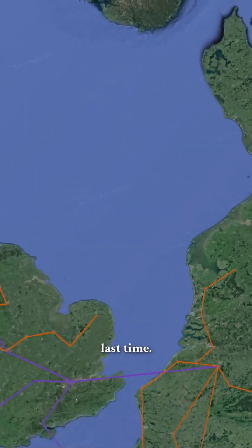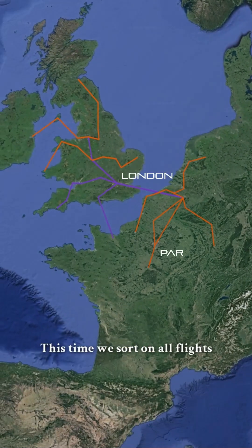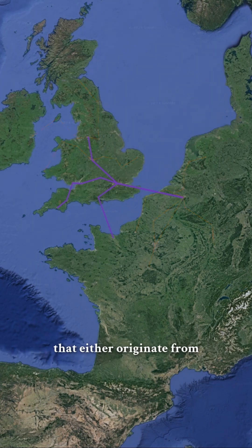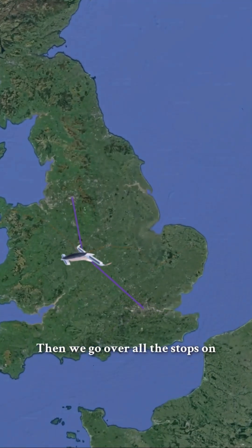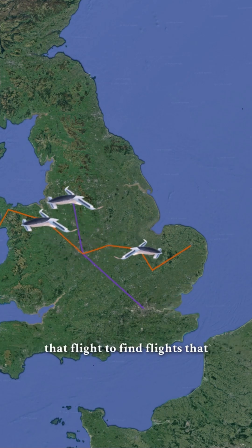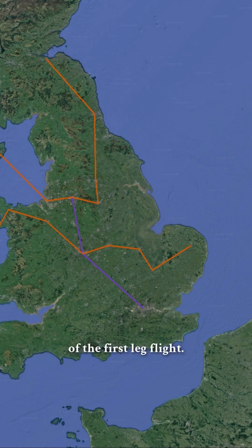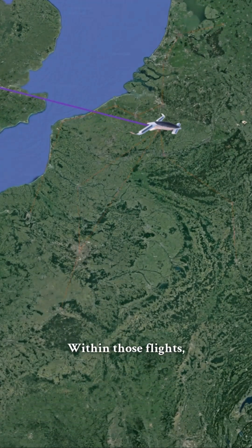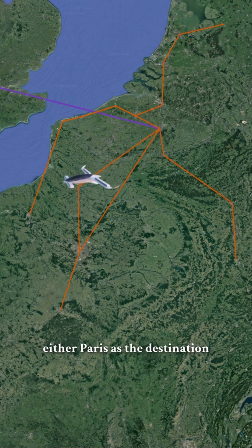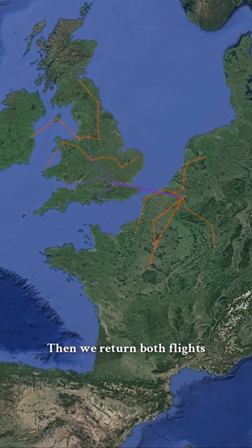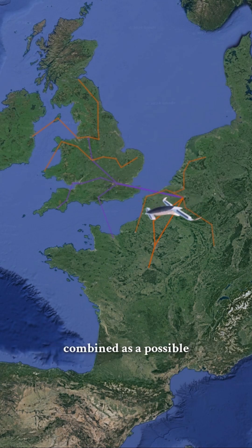We'll start with the same database of flight data as discussed last time. This time we sort on all flights that either originate from London or have London as a stop. Then we go over all the stops on that flight to find flights that depart within a set amount of time after the arrival time of the first leg flight. Within those flights we choose the flight that has either Paris as the destination or Paris as a stop. Then we return both flights combined as a possible trip option.